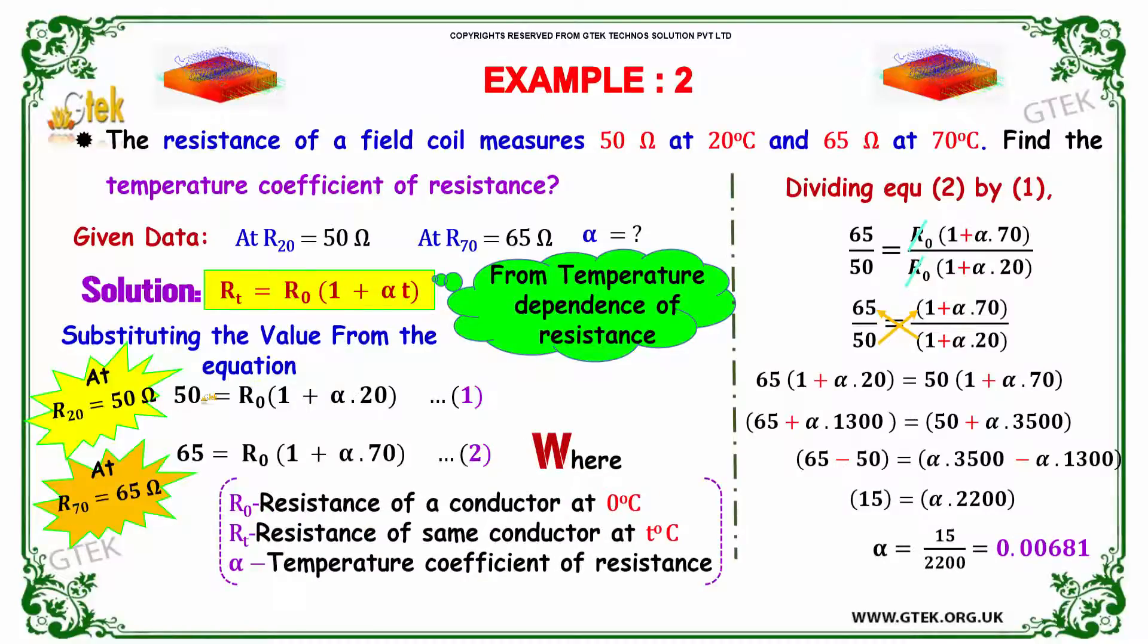So we got it as 50 is equal to R_0 into 1 plus alpha into 20, so T is 20. And R_0 we need to identify, we don't know, but R we know is 50.